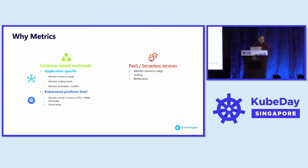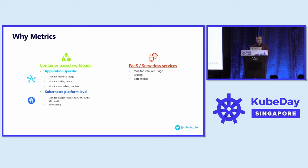The next thing we're going to look at is metrics, and why do we need them. Metrics help us collect data at different points in time at an aggregated level. Logs are good for knowing at an individual transaction level what happened, while metrics are useful for understanding resource usage over a period of time. From an application point of view, we can use metrics to collect resource usage, understand scaling needs, enable auto-scaling, and monitor anomalies. From a Kubernetes perspective, we can look at CPU and RAM usage, API health, and both pod-level and cluster-level auto-scaling needs.